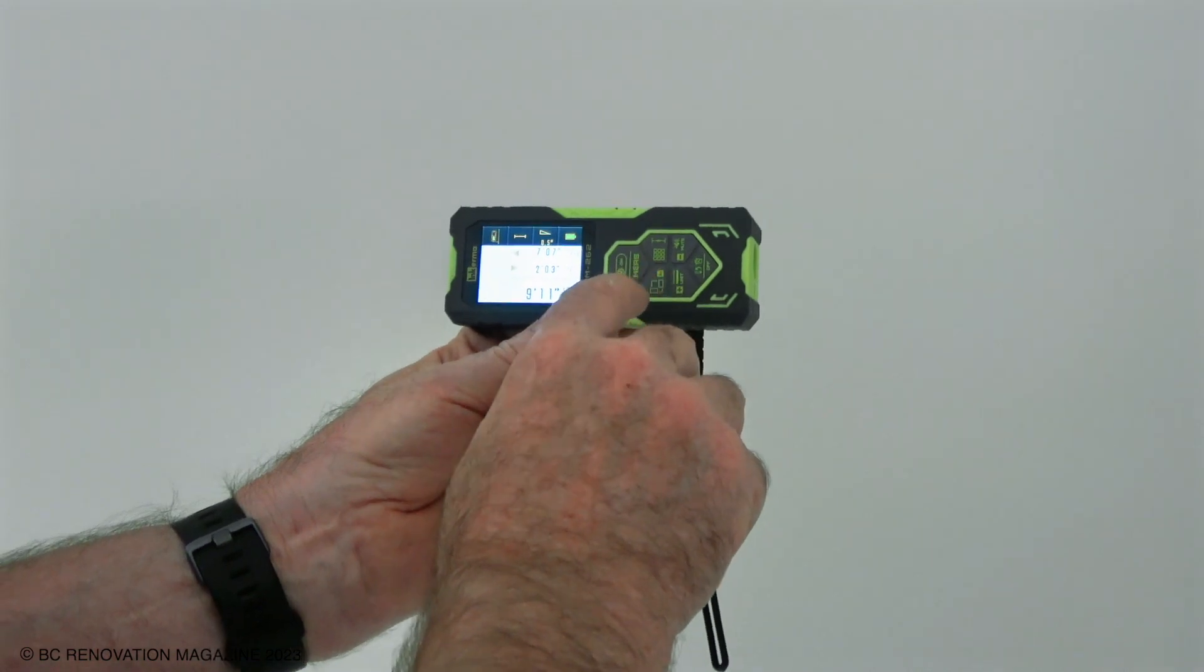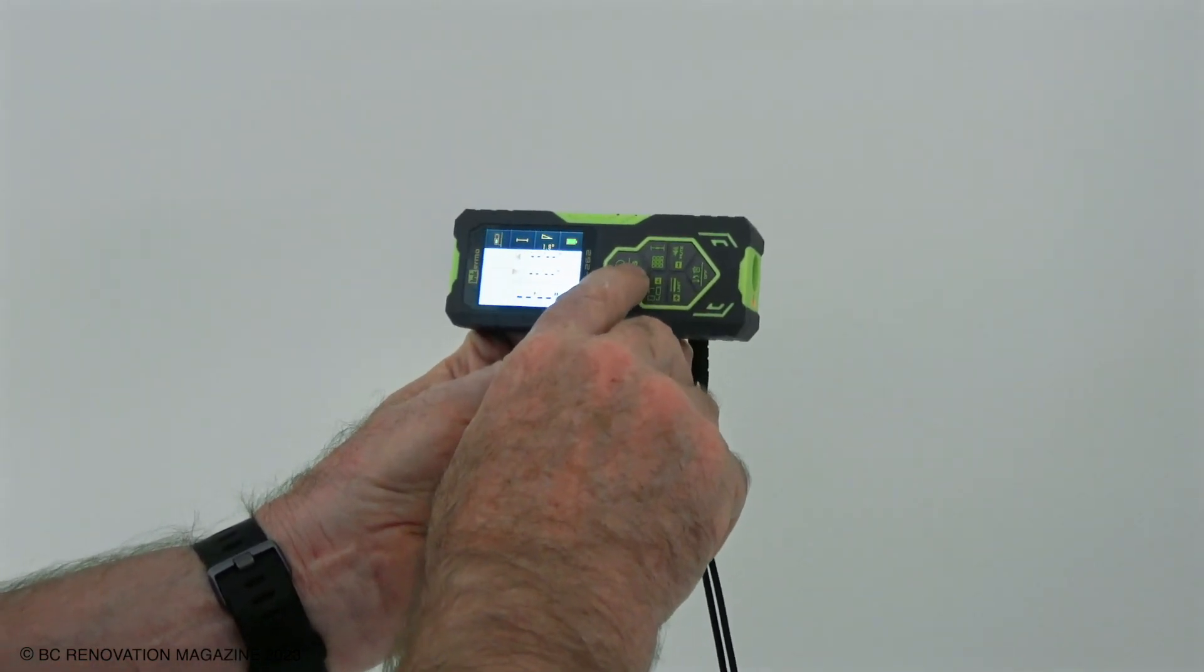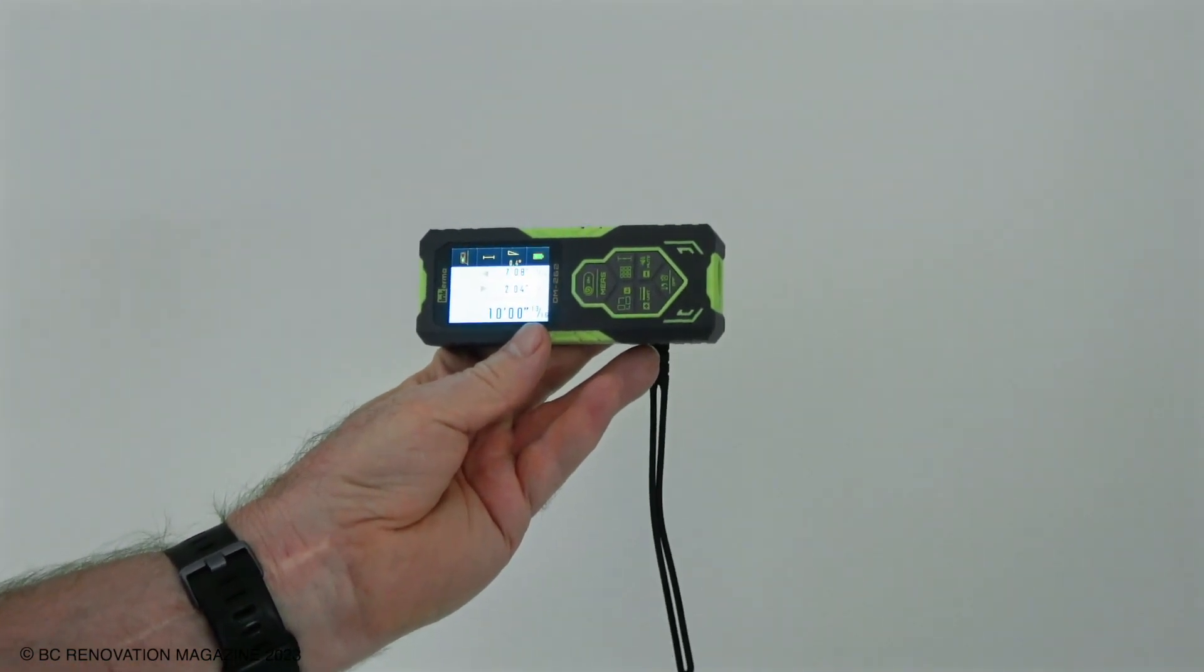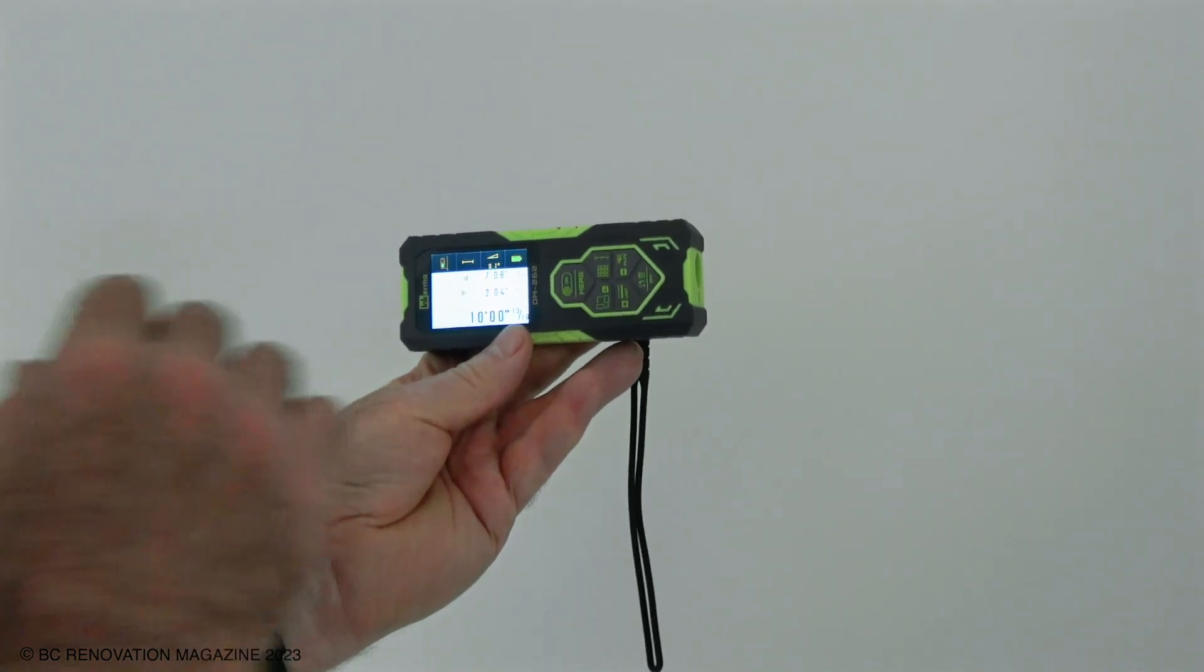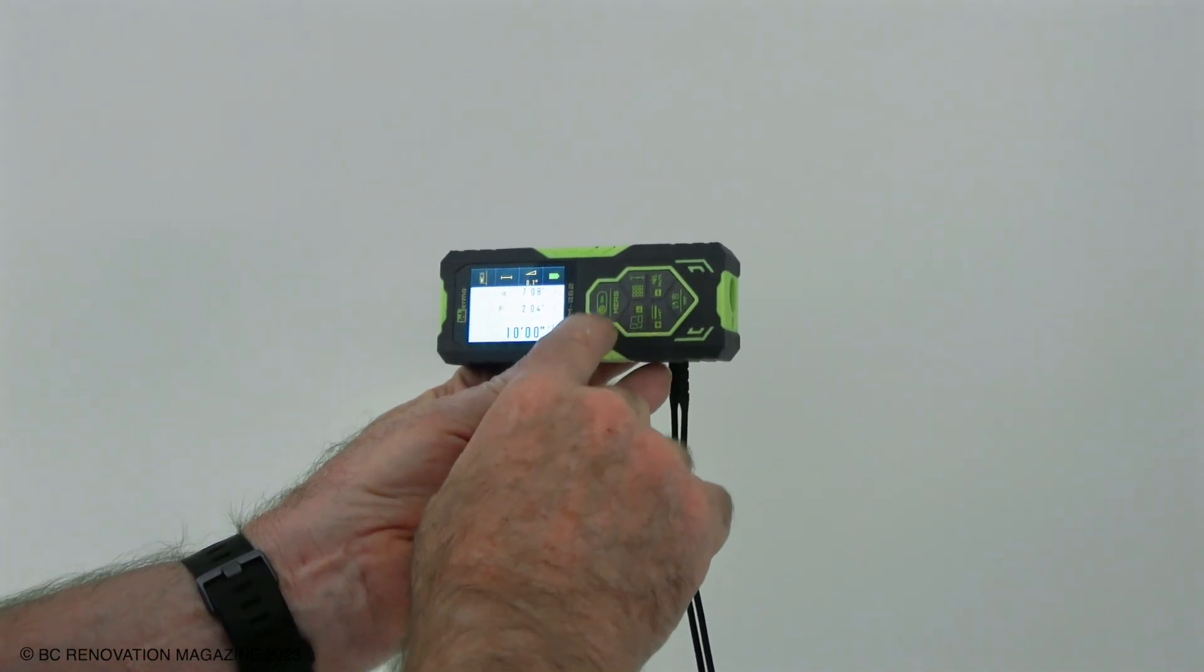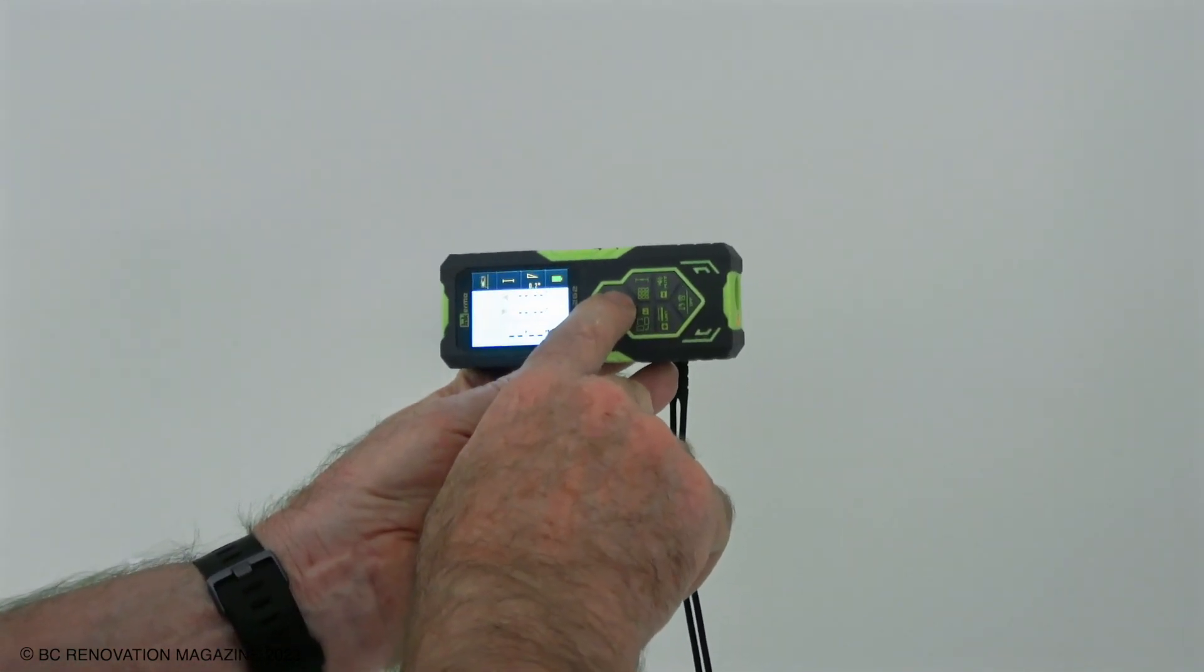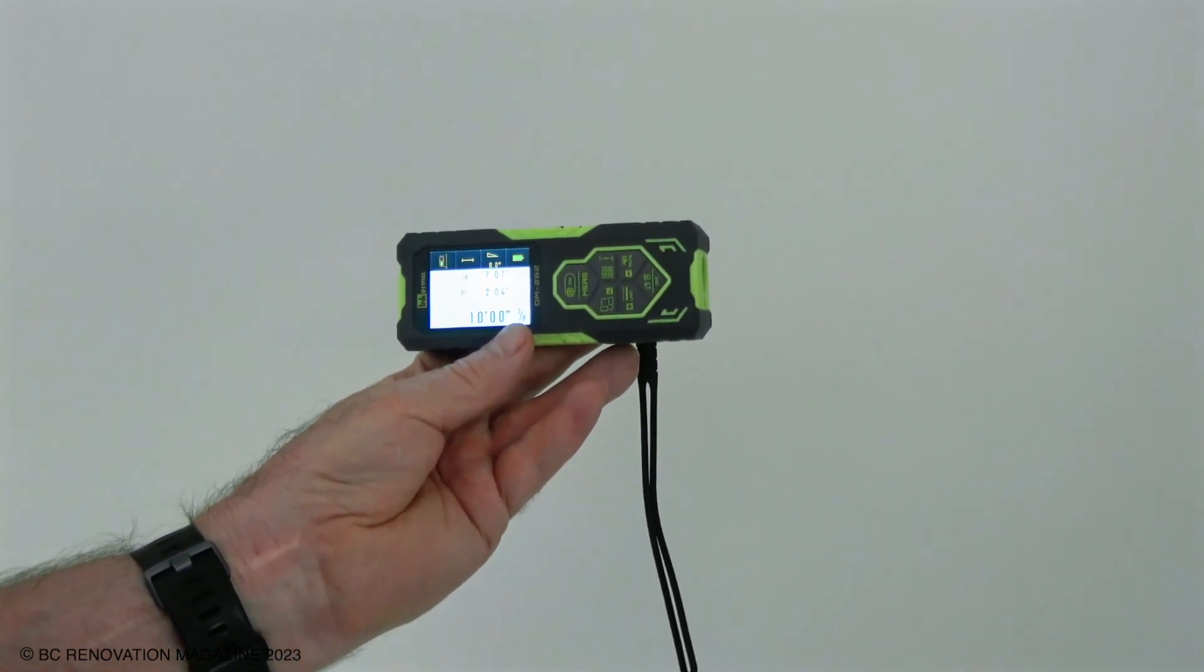Alright, let's test this and see if we get the same measurement twice. There we have ten feet and thirteen sixteenths of an inch. Okay, that's interesting. Let's take another measurement. Ten foot three eighths of an inch.